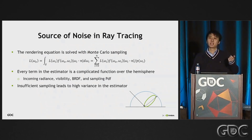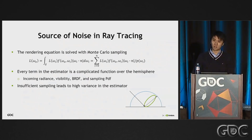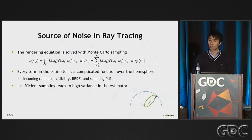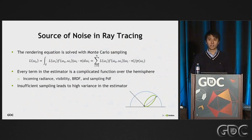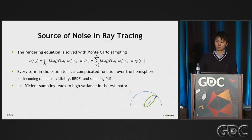So that's why you would typically expect to need at least hundreds if not thousands of samples to get a clean image rendered with ray tracing. But in the case of real-time rendering, the realistic budget for us is probably only one to two samples per pixel, which is extremely insufficient to get anything reliable.